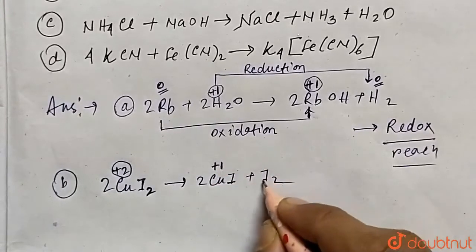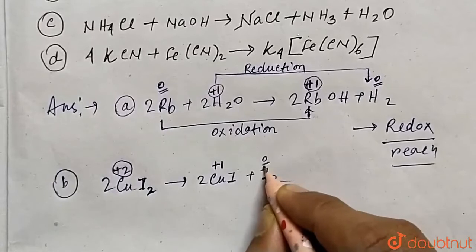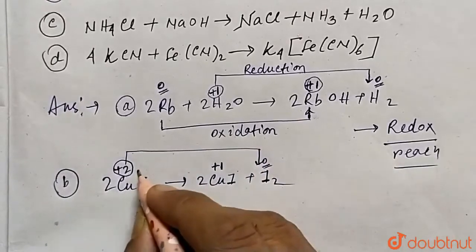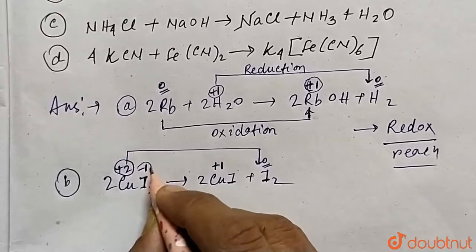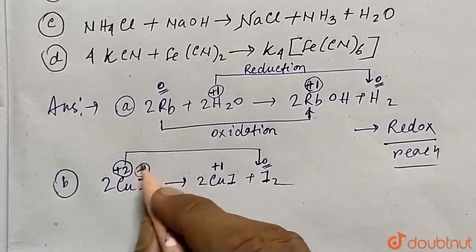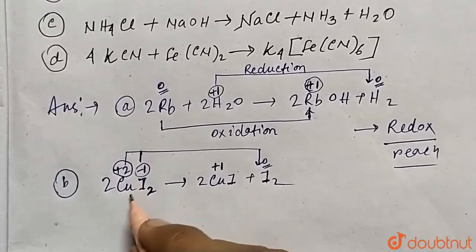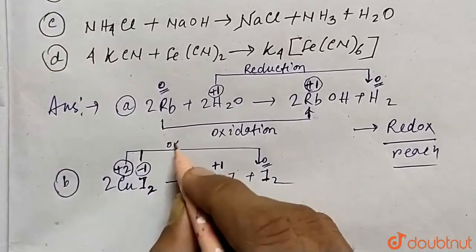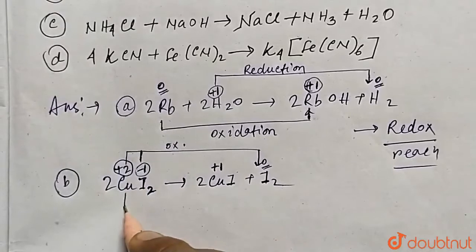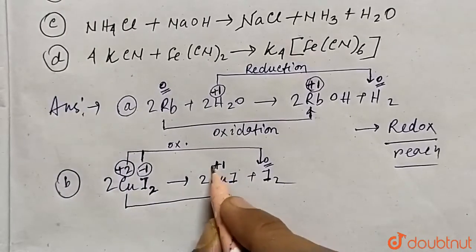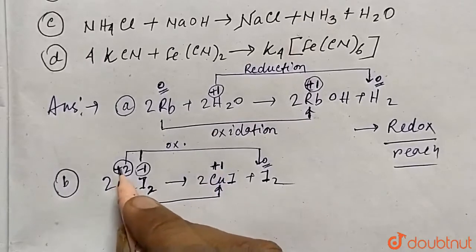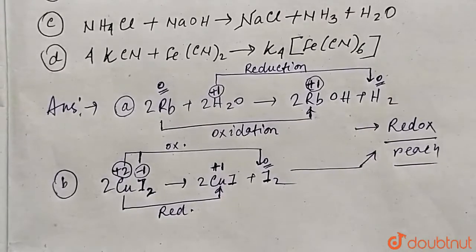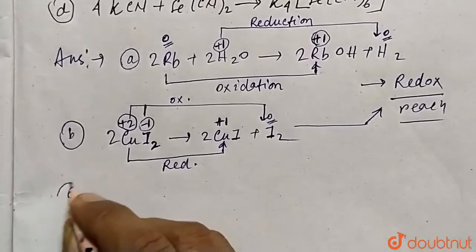In CuI, copper is +1 and iodine is -1. In free I₂, iodine has oxidation state 0. So iodide goes from -1 to 0, which is oxidation, and copper goes from +2 to +1, which is reduction. Therefore, reaction B is also a redox reaction.